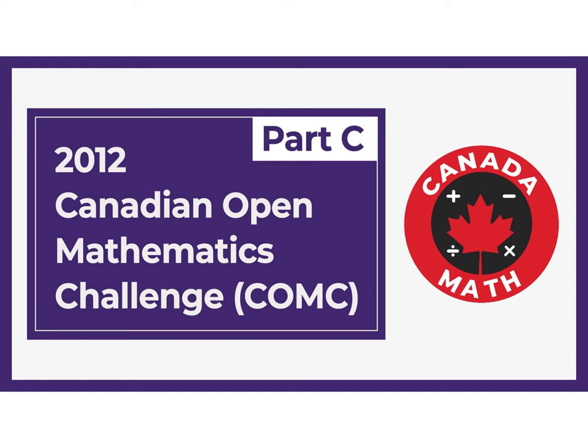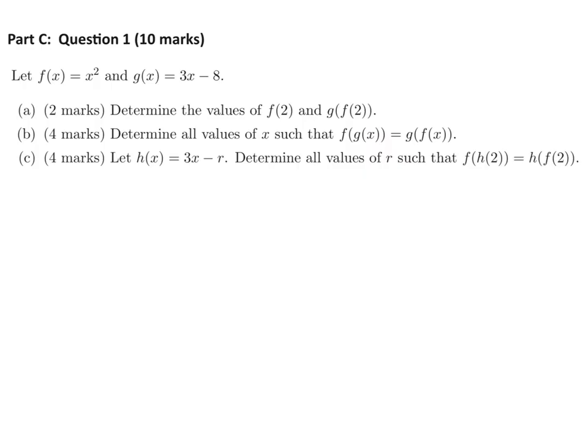2012 Canadian Open Mathematics Challenge Part C. Let f(x) = 2x squared and g(x) = 3x minus 8. Find the values of f(2) and g(f(2)).